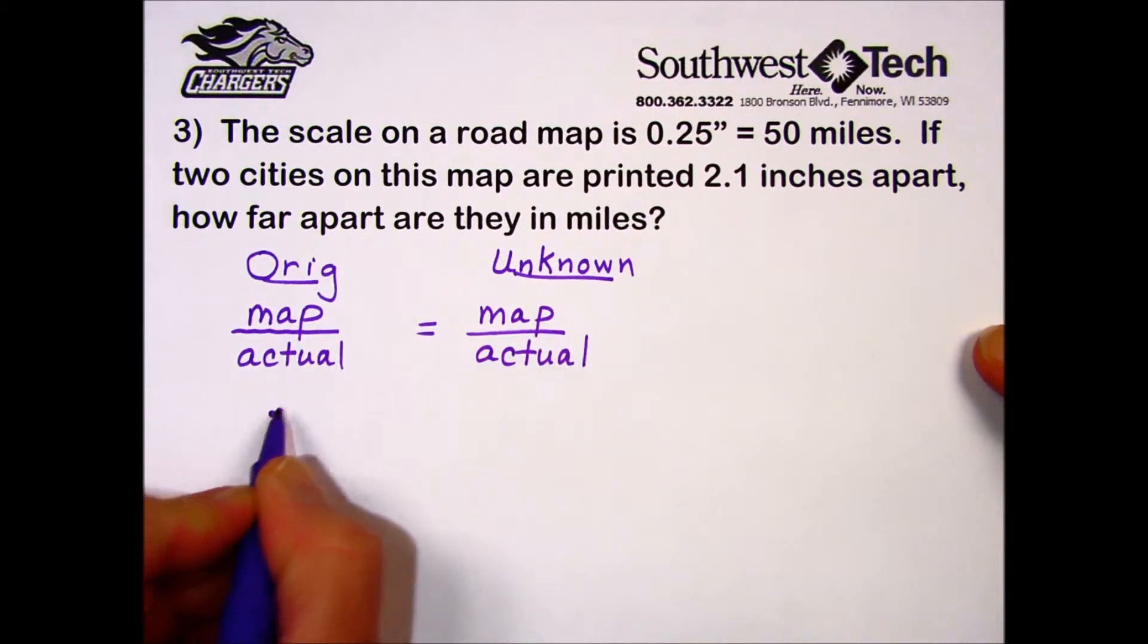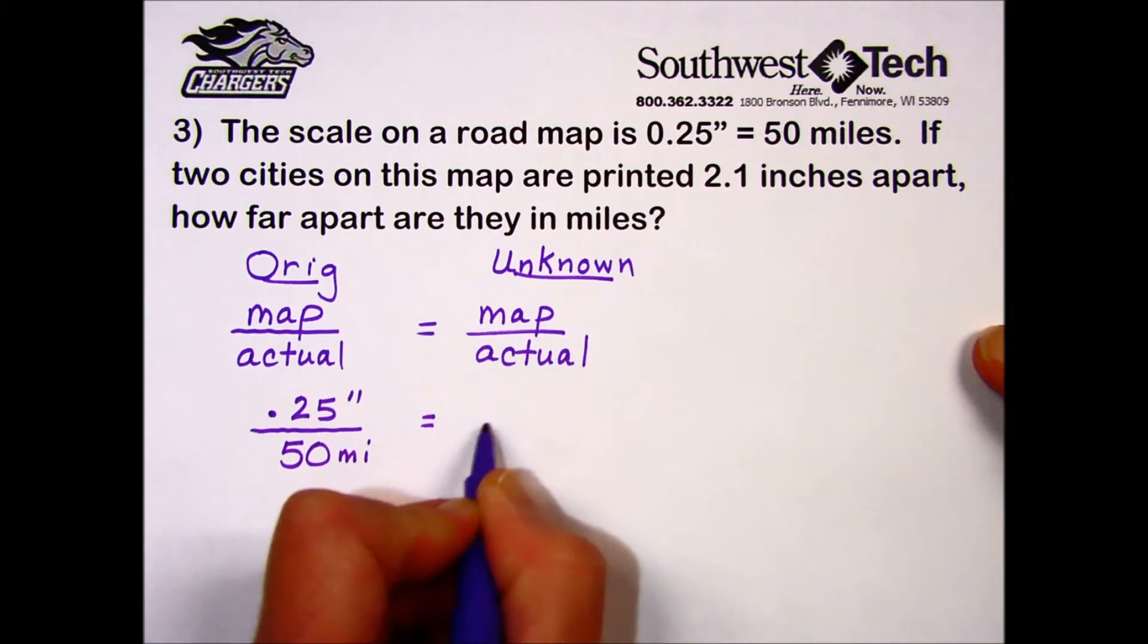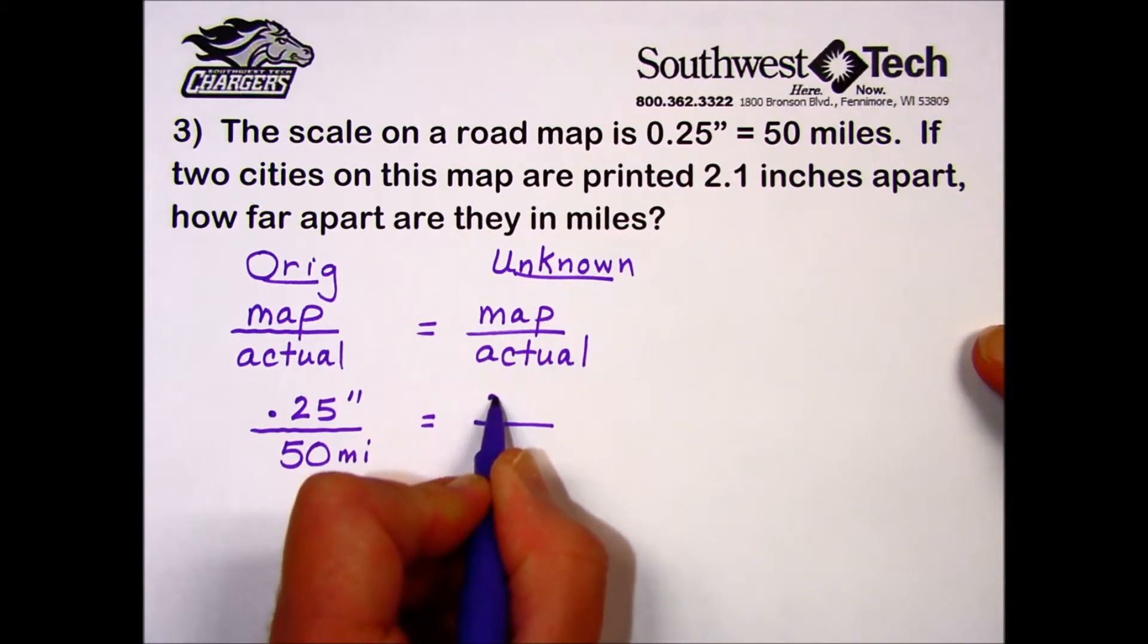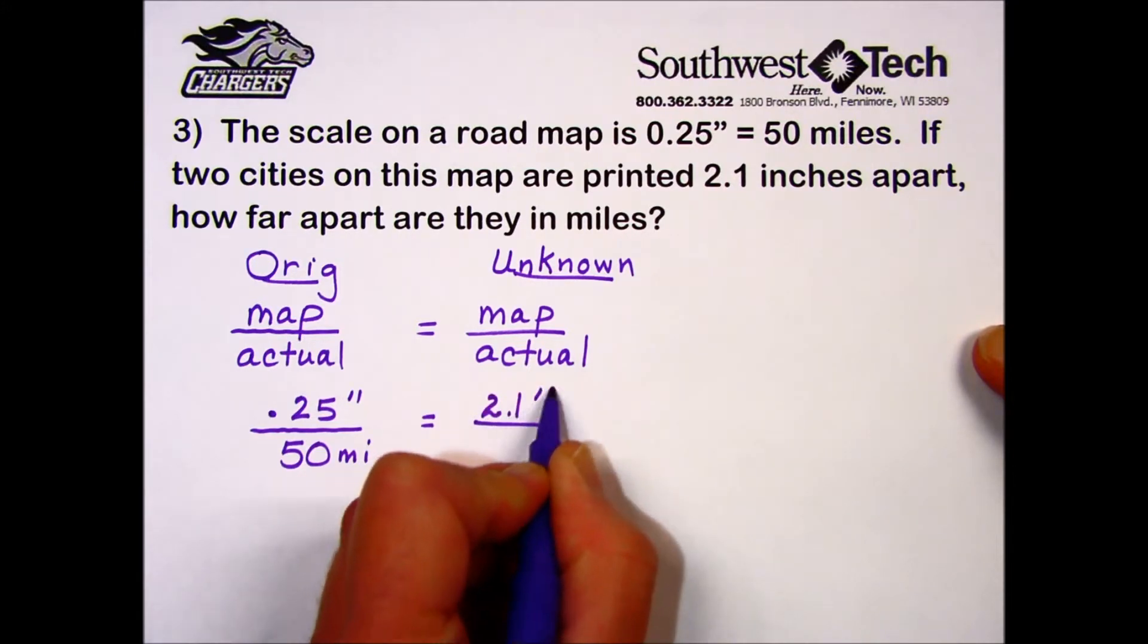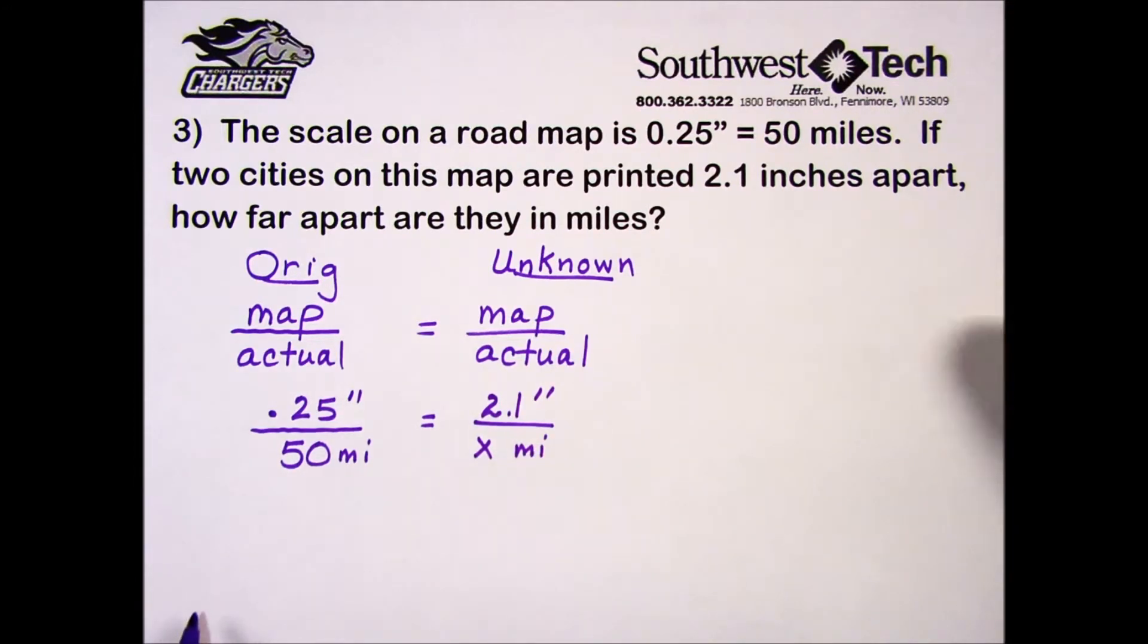The scale on the map is 0.25 inches is equal to 50 miles in the real world. The question is how far are they apart in miles if the map shows 2.1 inches? So our number of miles is unknown. We'll let x represent that unknown.